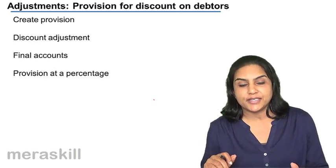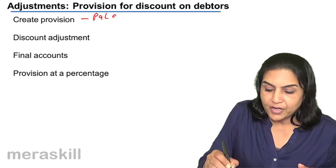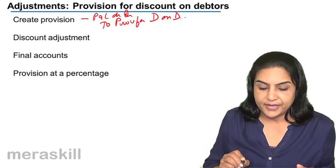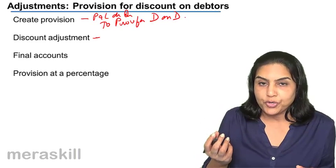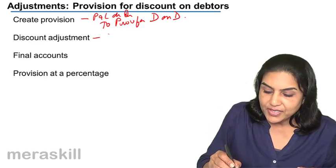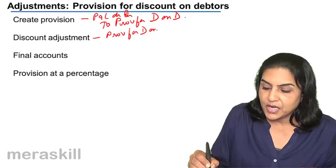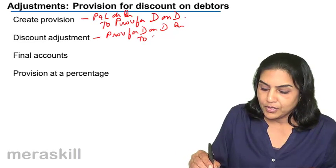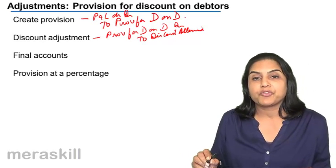How do we adjust the discount? We have created the provision — that is, profit and loss account debit to provision for discount on debtors. There is a discount expense with a debit balance. This discount is transferred to the provision account: provision for discount on debtors debit to discount allowed. The discount allowed expense account is thus transferred to the provision account.